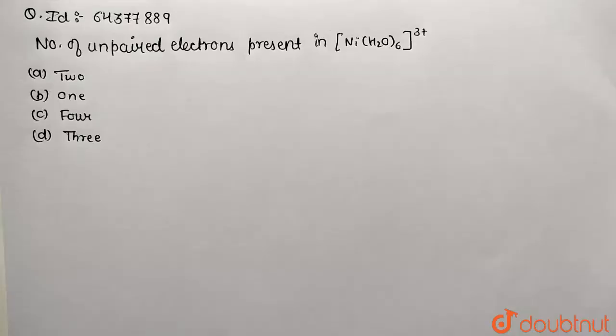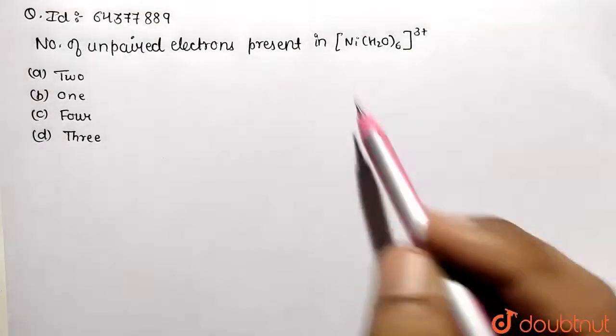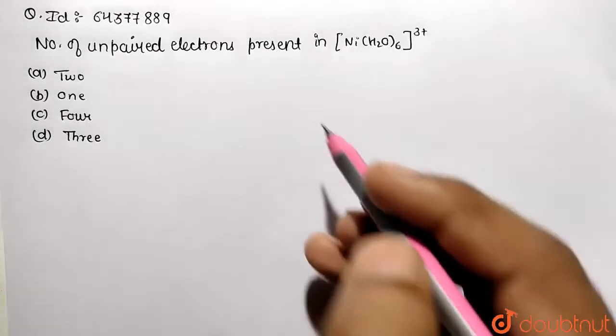Hello students, in this given complex we need to find the number of unpaired electrons in the given complex entity. So [Ni(H2O)6]³⁺ is the given entity. Now let's work upon the following.